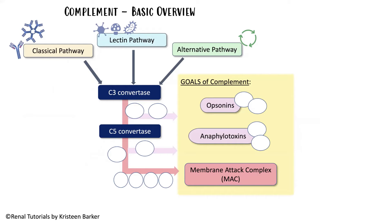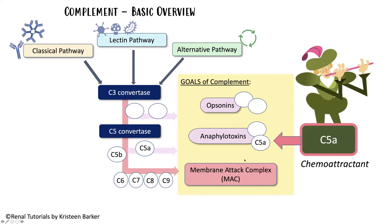We're not going to do all of complement today — I would not torture you like that. But I'm just going to show you where C5 comes into this whole situation. You probably have three different ways to trigger your complement, which converges on C3 convertase and then C5 convertase. Beyond C5 convertase, we have C5A — which is what we're interested in for ANCA vasculitis — and then we have C5B. These are two separate things that do two different things; they are completely independent. C5B is going to go on to join up with 6, 7, 8, and 9 to form the membrane attack complex. But C5A is not — it has nothing to do with the membrane attack complex. C5A is an anaphylatoxin, which means C5A is going to act as a chemoattractant, bringing immune cells into the area, and it's also going to activate those cells when they arrive, including neutrophils.